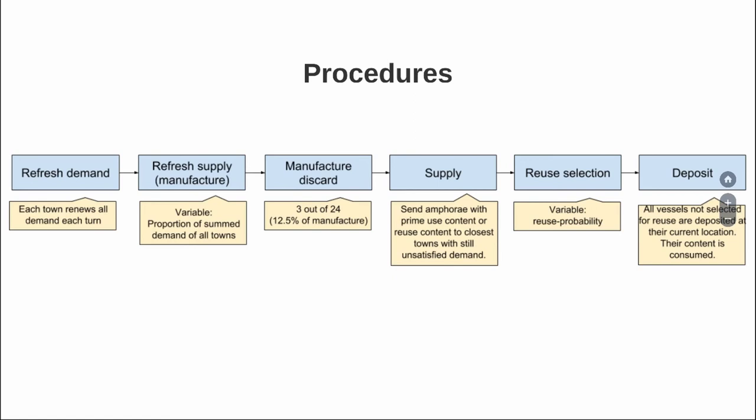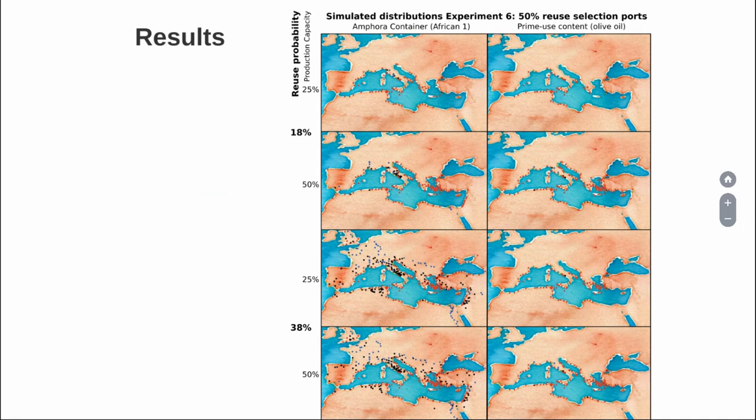In the next time step, the ones selected for reuse will be further disseminated. Here are some example results of one experiment — experiment number six — in which we assume 50% reuse selection at ports. I also modify from 25 to 50% the production capacity of the producer, which is basically their ability to satisfy all the demand in the system. On the left-hand side we have simulated distributions of the pots. On the right-hand side we have simulated distributions of the olive oil. In this theoretical scenario, the distribution of the pots is different from the distribution of the olive oil — and the cause of that is the theorized impact of reuse.